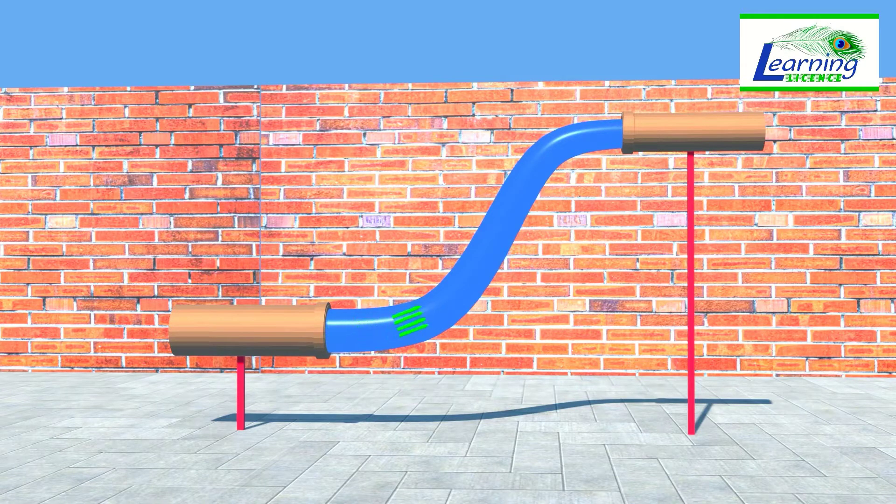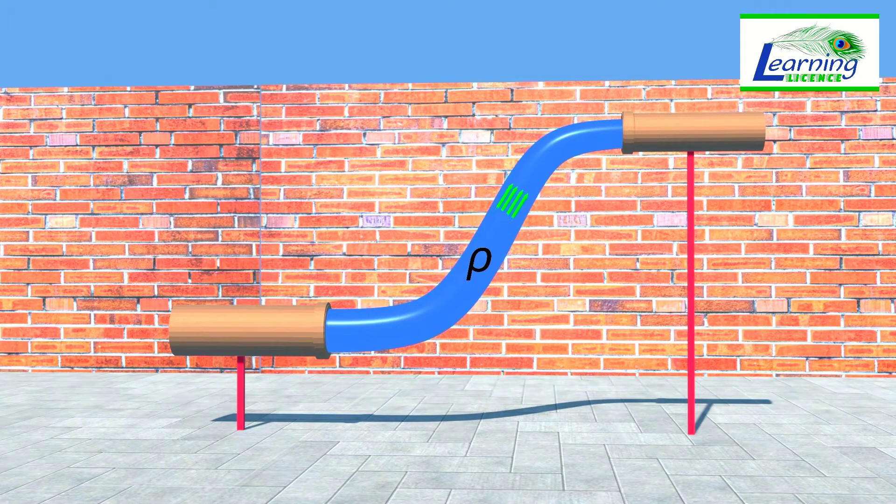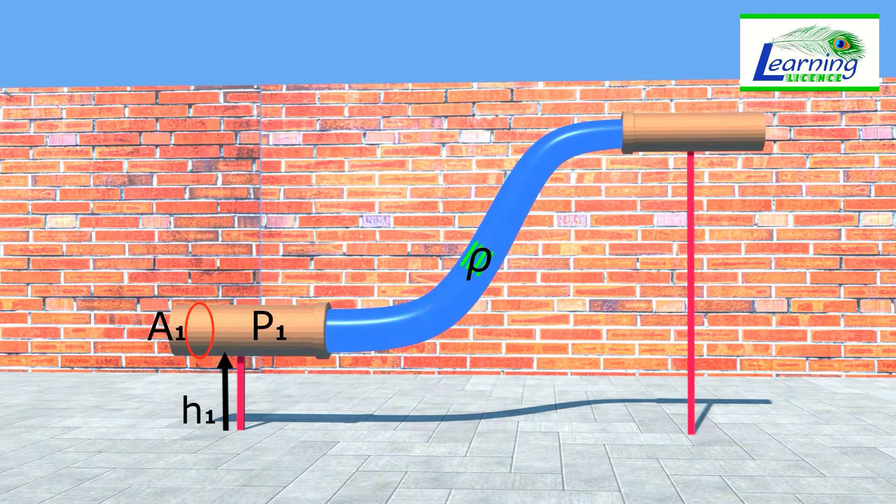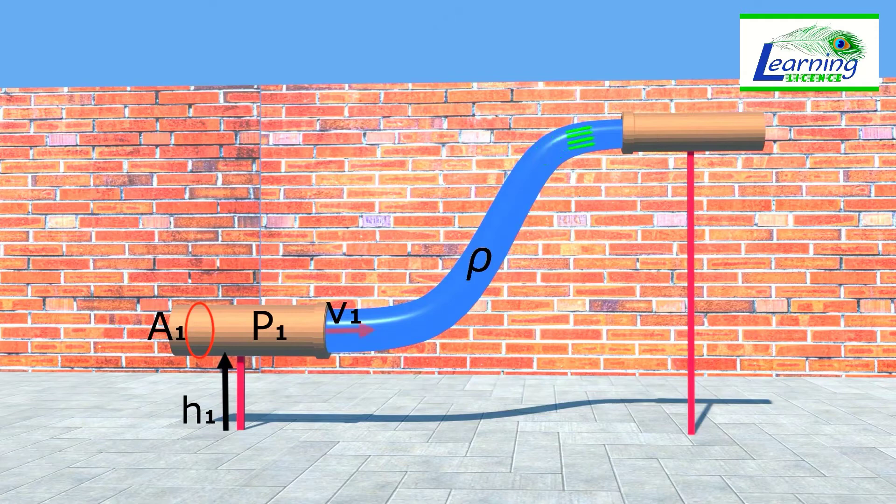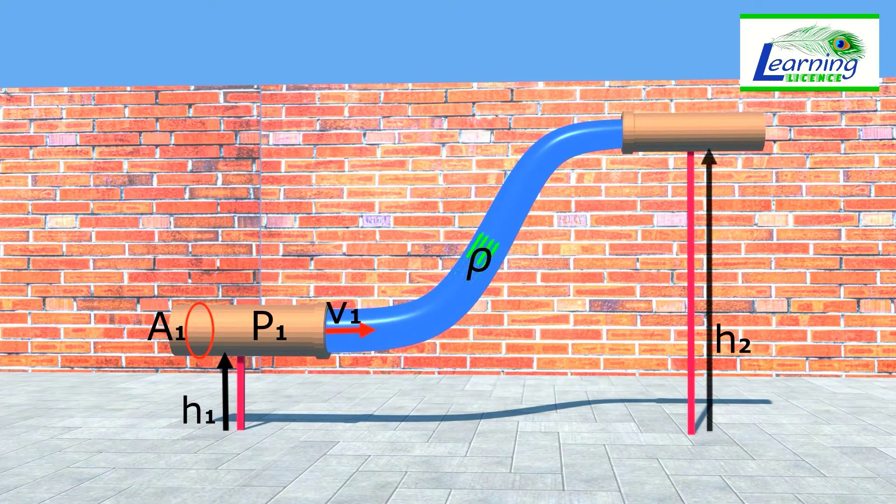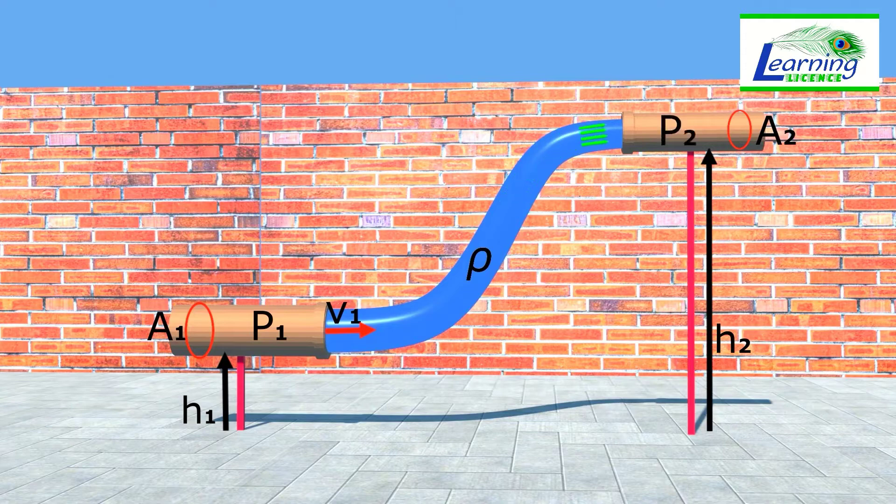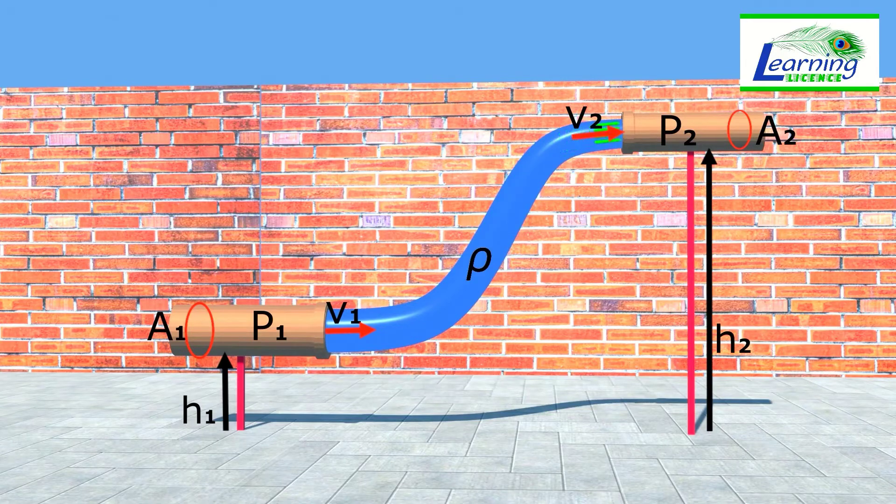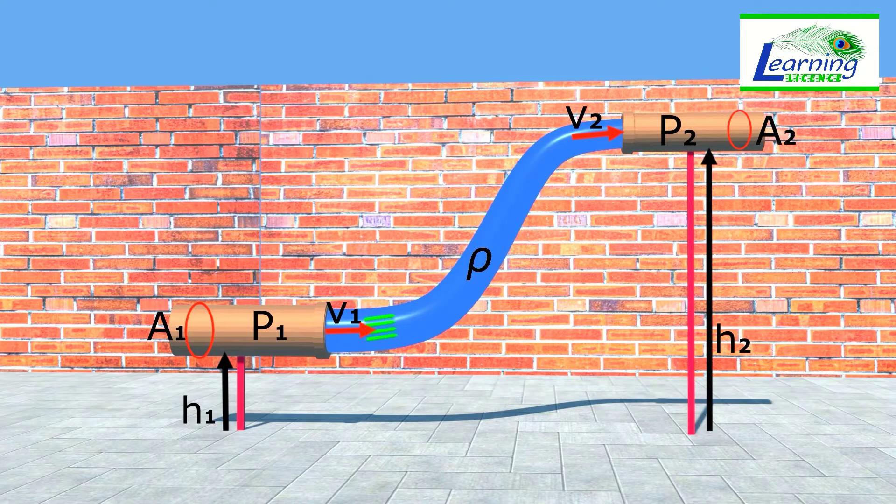The density of fluid is rho. The left-sided end of pipe is at height H1 from ground, cross-sectional area A1, pressure of fluid at this end is P1, and velocity is V1. And at the other end of pipe, the same quantities are H2, A2, P2, and V2.